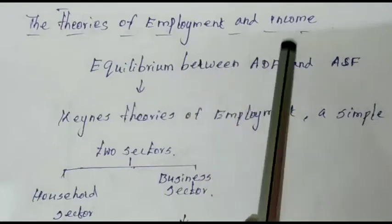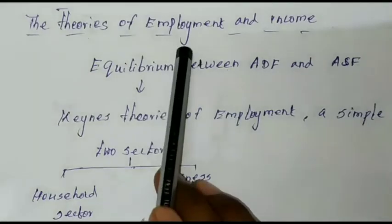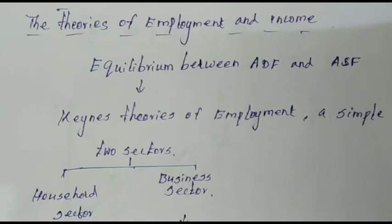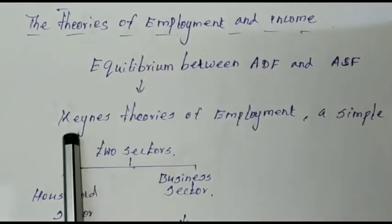The theory of Employment and Income is a general theory of Employment and Income. In the previous video, we covered Effective Demand and the Aggregated Demand Function. We are now focusing on how equilibrium between Aggregated Demand and Aggregated Supply is established — this comes from the Keynesian Theory of Employment.